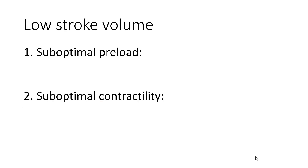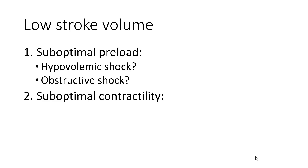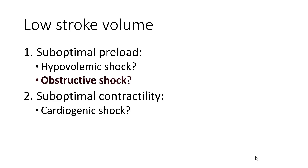When faced with a low stroke volume, we always ask: is this secondary to sub-optimal preload, or sub-optimal contractility? This helps us delineate causes of shock, including hypovolemic and obstructive shock within the finding of sub-optimal preload, and cardiogenic shock under sub-optimal contractility. Thinking about our dilated RV, we really honed in on whether this could have been secondary to obstructive shock.